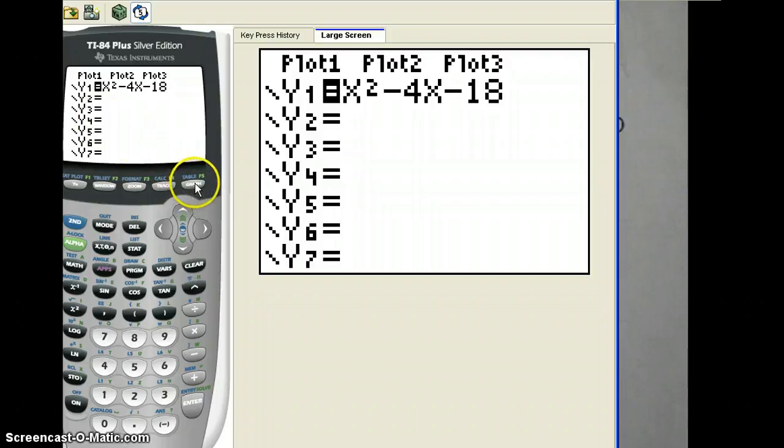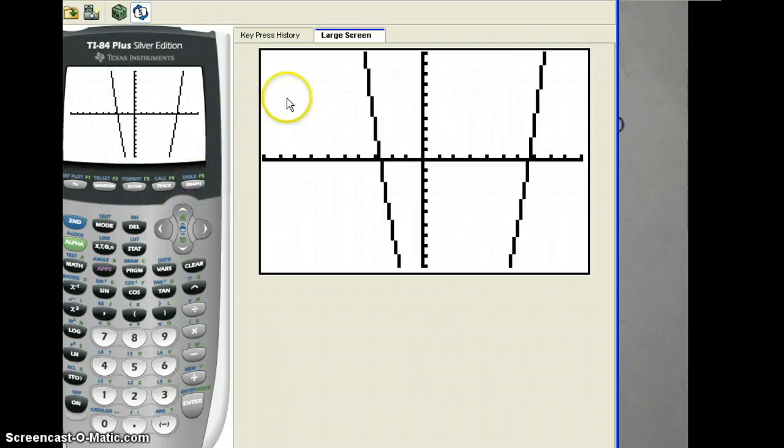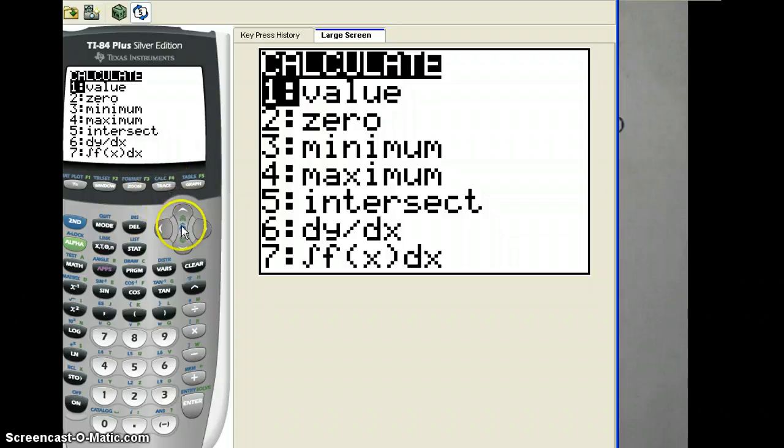to get the solutions, you could go to graph. And you can see the solutions here, negative 2.9 maybe, and 1, 2, 3, 4, 5, 6, 6.9. To get those exact solutions, you're going to go to 2nd, trace.